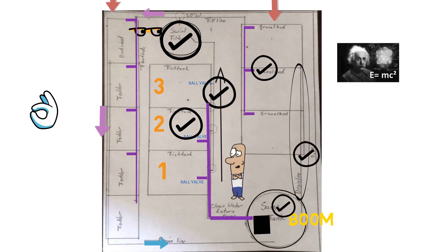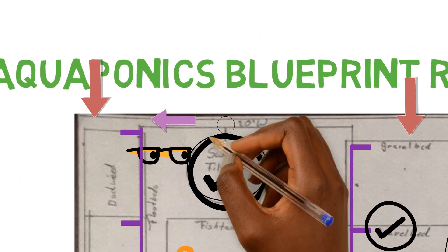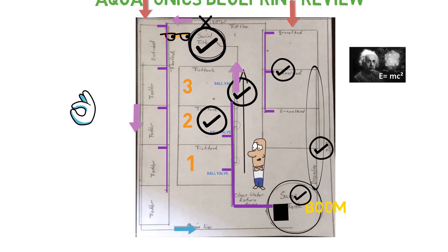And that would do the same thing that you have it doing everything. The fish tanks being drained into the swirl filter, but the swirl filter wouldn't connect to these other two beds. The swirl filter from there would come back down into the sump tank. That's where that would connect.